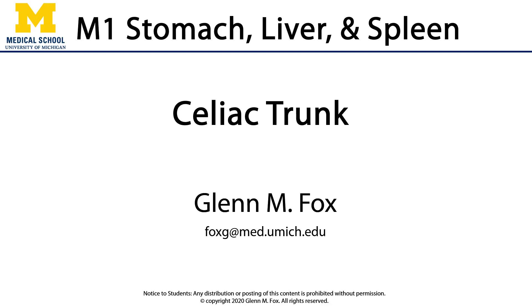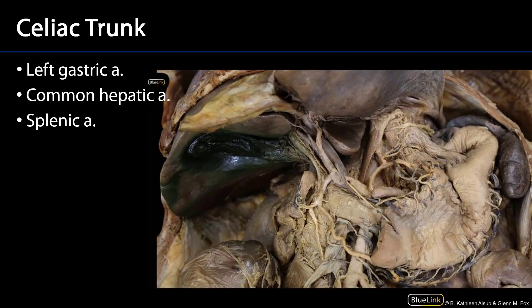Let's talk about the celiac trunk. The celiac trunk is the first major anterior branch of the abdominal aorta, coming off at about the level of T12 going out to the viscera. It's the dominant blood supply to the derivatives of the embryonic foregut, and typically the trunk itself is not all that impressive — it's very short — but there are three branches that are quite lovely.